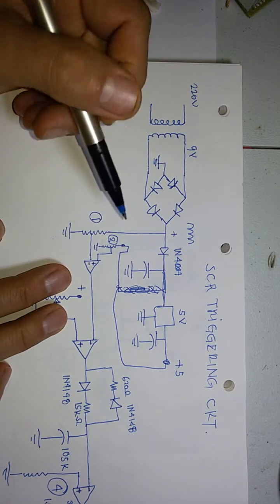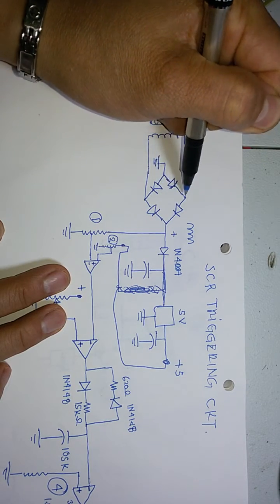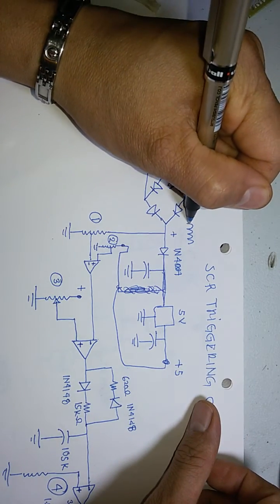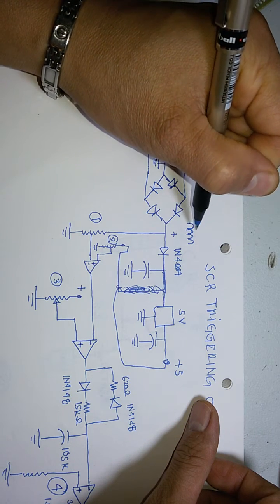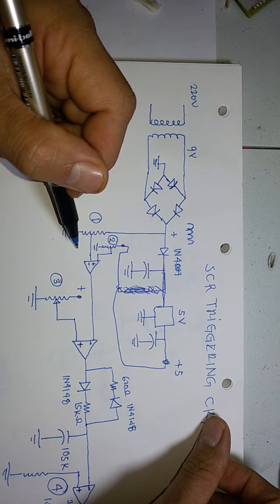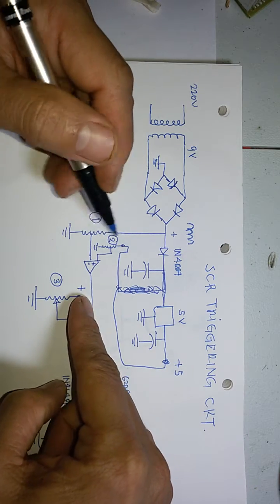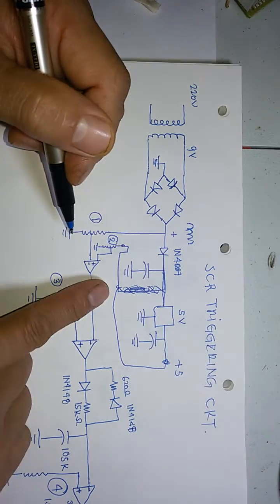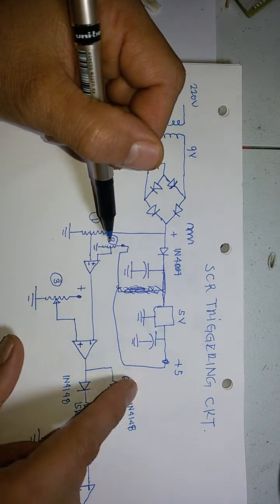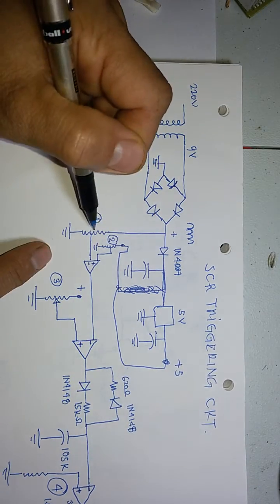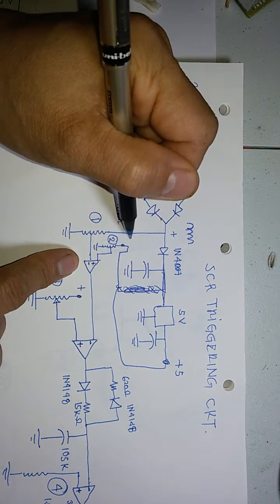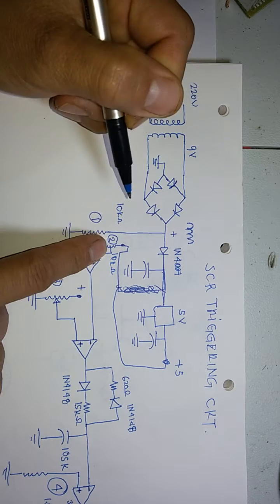We have one comparator circuit here. The output from our bridge diode is a ripple DC. We will use that ripple DC for our comparator, and compare it with a control signal. We have a 10 kilohm potentiometer for this control voltage of 5 volts.